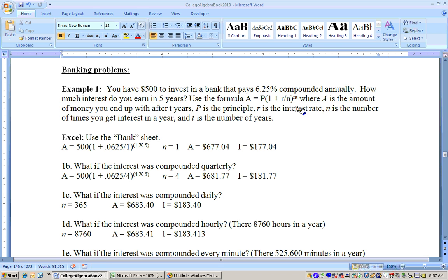On this problem, you're getting interest annually, so that means you're getting interest one time a year. Your N is 1, and that's raised to the N times t, or on this problem, 1 times 5. If you're going to do this problem by hand, you would take 0.0625 divided by 1, which is 0.0625.